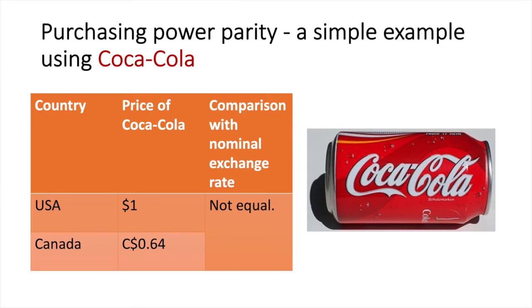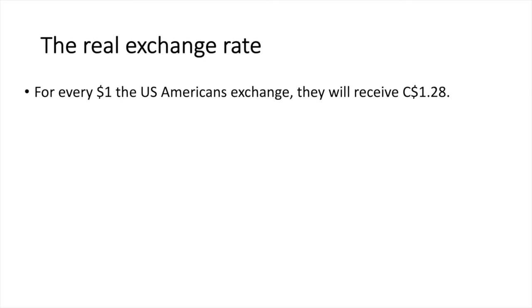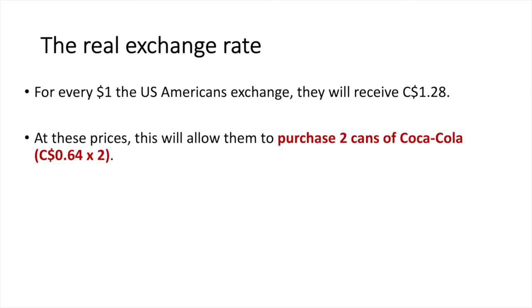Let's use the same countries again, but this time we will cut the price of a Canadian can of Coca-Cola to C$0.64. Given our nominal exchange rate of 1 USD to 1.28 CAD, we can see in this table that a Coca-Cola is actually half the price in Canada relative to the US. For every $1 USD the Americans exchange, they will receive 1.28 CAD, which at the given prices will allow them to purchase 2 cans of Coca-Cola.